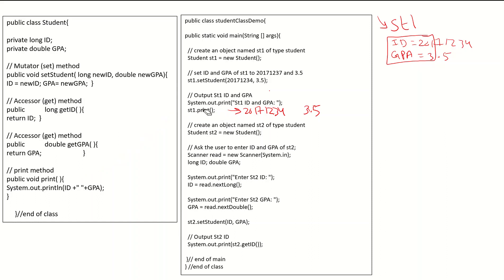As with most applications, you will usually have many objects, not just one. Here it says go and create another object st2 of type Student. I apply the same concept: Student st2 = new Student. So st2 is another object that should have all the private and public methods from the Student class. We must be careful that st1 and st2 are both of type Student but have different values — the ID in st1 is different from the ID in st2.